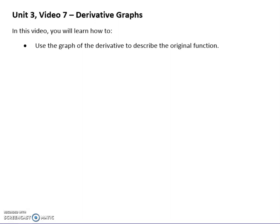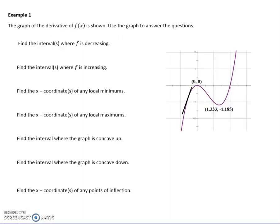In video 7 we're going to look at derivative graphs. We're going to get more intense with the graph of the derivative and use it to describe what's happening for the original function. Here's our example — the graph of the derivative is shown. This is huge. If this is the derivative, I would make it very obvious by marking it at the top. That means this graph is already representing the slope.